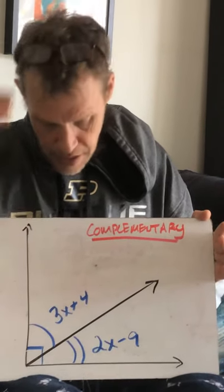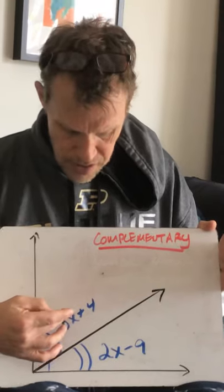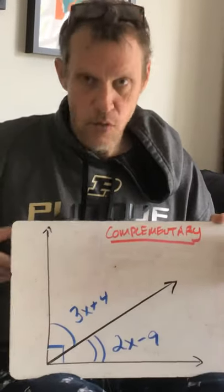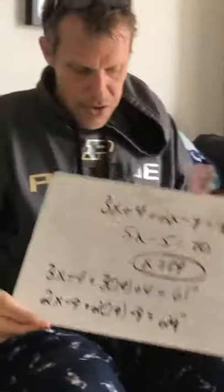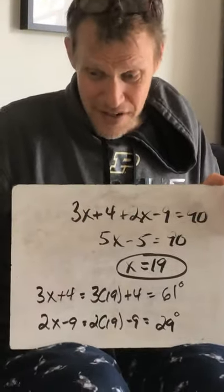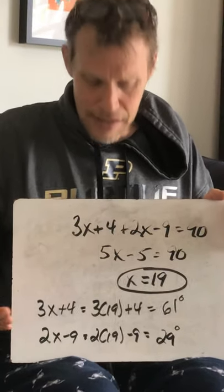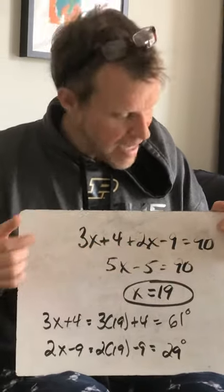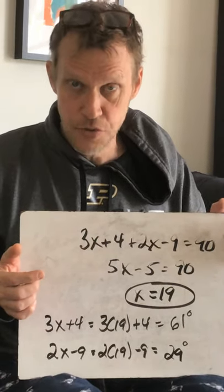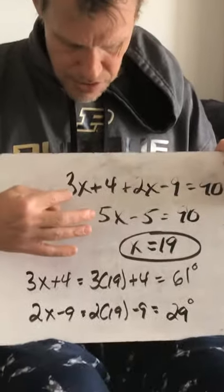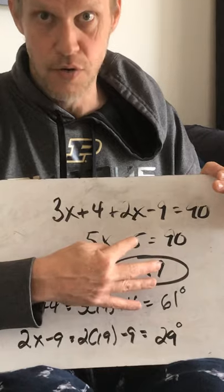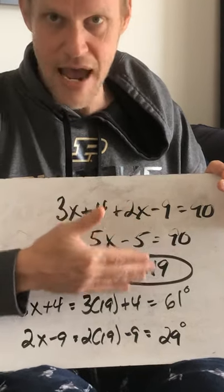You can't find the measurement of one of these angles unless you find x first. You have to realize that when you add these two together it equals 90 because they're complementary. So we go back to equations from quarter one — combining like terms. You have 3x plus 4 plus 2x minus 9 is equal to 90. This will change when we get to supplementary — we won't make it equal to 90. Combine like terms: 3x plus 2x is 5x, and negative 9 plus 4 is negative 5.